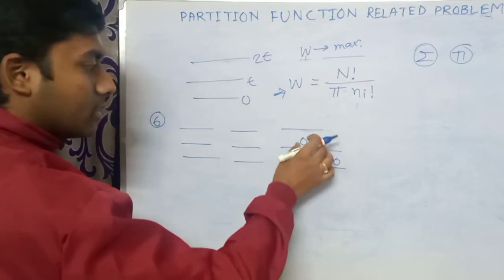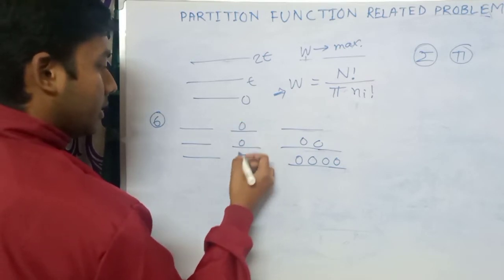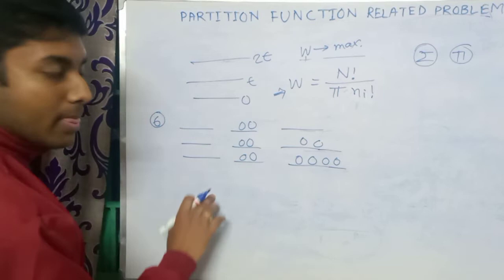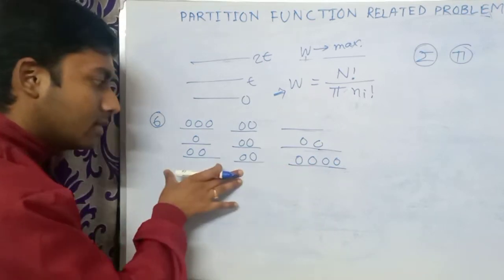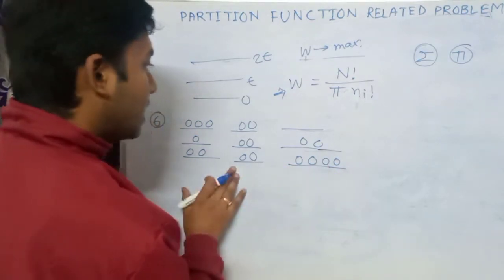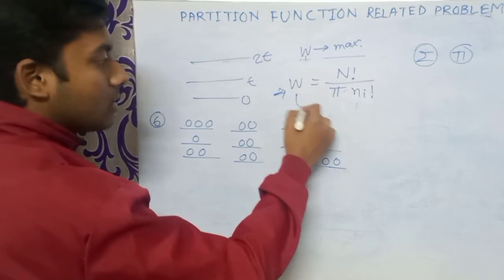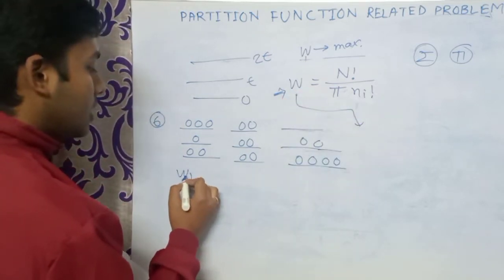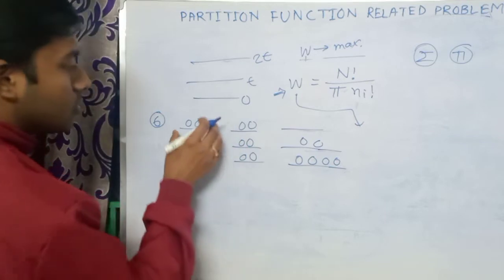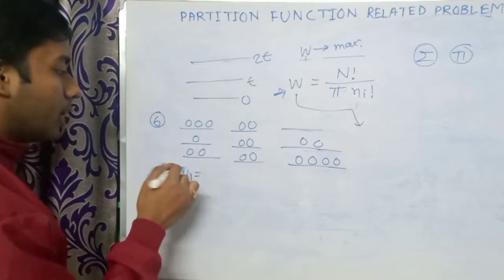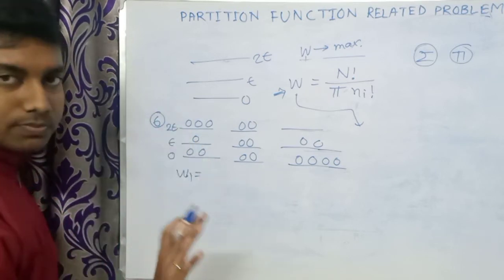In arrangement one, four particles are in one state and two are in another. The second and third arrangements are different configurations of the six particles. These three arrangements are completely distinct from each other. The number of microstates W for each macrostate is the total number of such arrangements.